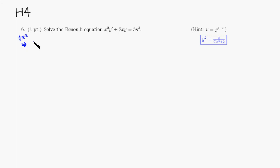Then you will get y prime plus, and one of the x's cancel out, so it's going to be 2 over x, and y is equal to 5 over x squared.